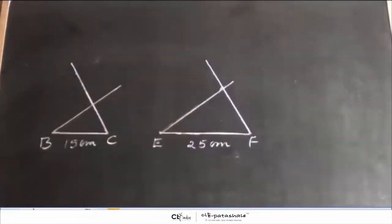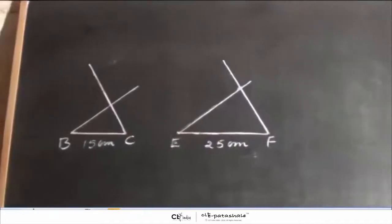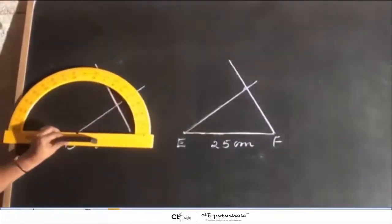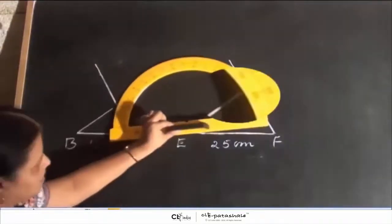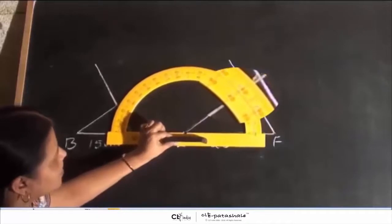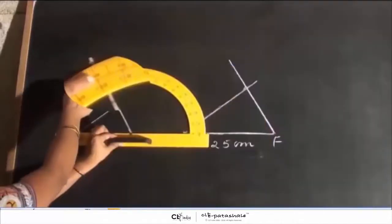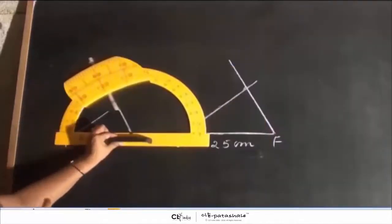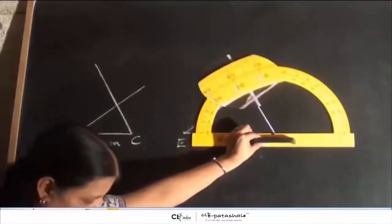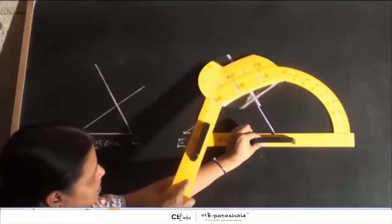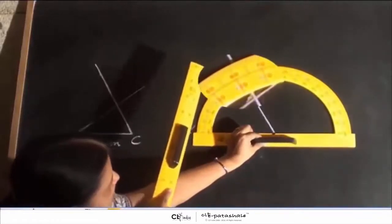Now, at point B, we will measure which is equal to 40 degrees and at point E, again we will measure which is also equal to 40 degrees. We will measure again at point C and point F which is equal to 60 degrees.